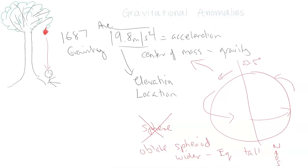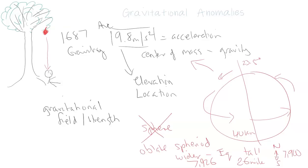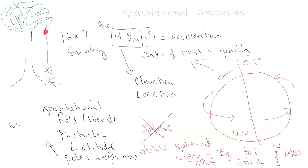The Earth is actually wider around the equator than it is tall from north to south pole. The equator is 7,926 miles versus north to south at 7,900 miles — about a 26-mile or 40-kilometer difference. So it's an oblate spheroid, fatter than it is tall. This causes changes within the gravitational field strength — it fluctuates based on where you are. In terms of latitude, if you are closer to the poles, you actually weigh more. If you go to Ecuador on the equator, you'd actually weigh less.